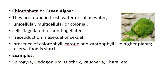Chlorophyta: They are found in fresh water or saline water. They may be unicellular, multicellular, or colonial. Cells may be flagellated or non-flagellated. Reproduction is by asexual or sexual method. Pigments present are chlorophyll, carotene, and xanthophyll, as in higher plants. Reserve food is starch. Examples: Spirogyra, Oedogonium, Ulothrix, Vaucheria.